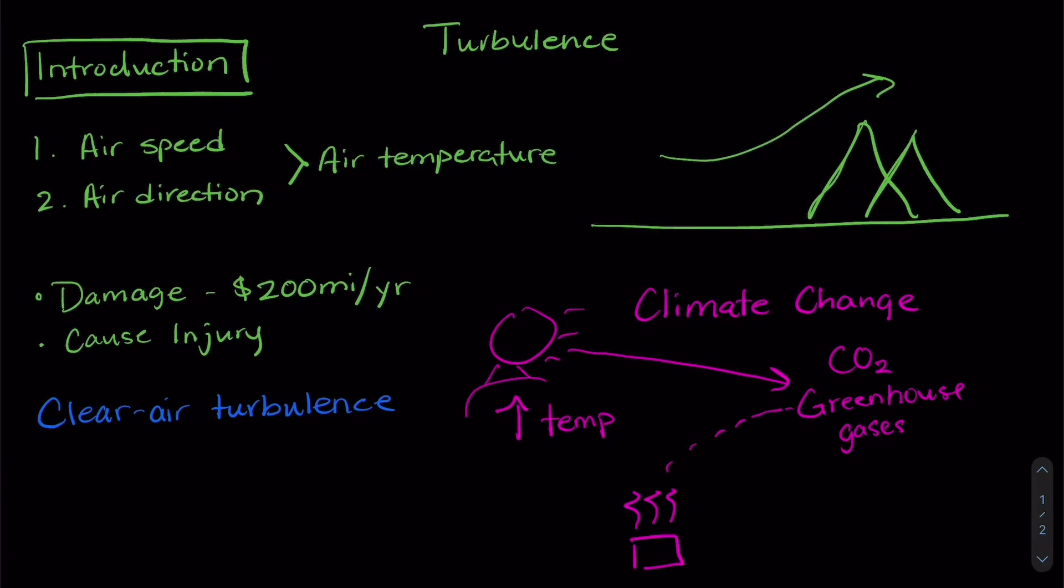Now remember like I said before an increase in temperature or change in temperature can cause differences in air speed and air direction. This is why we're worried about climate change causing differences in turbulence. So the question here is does climate change cause changes in clear air turbulence.